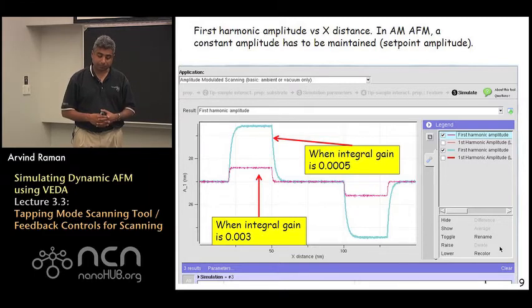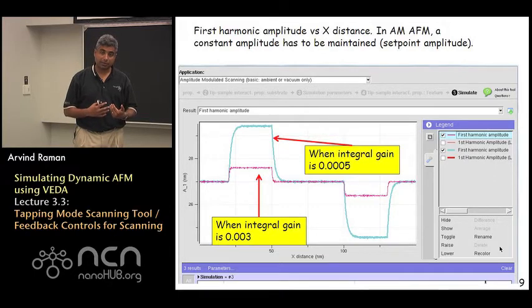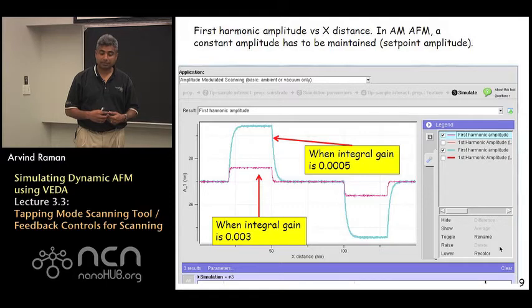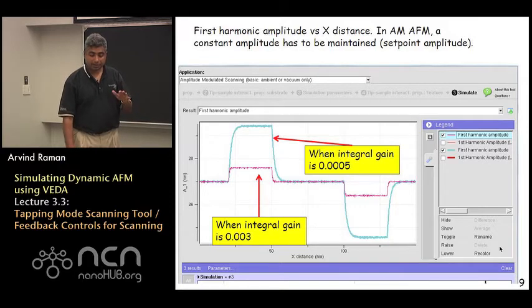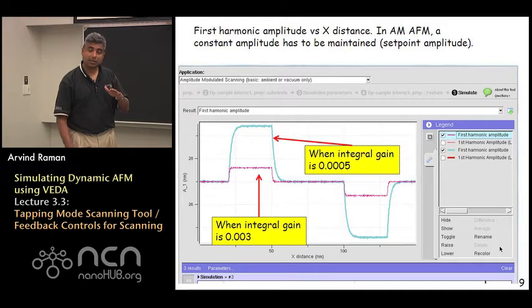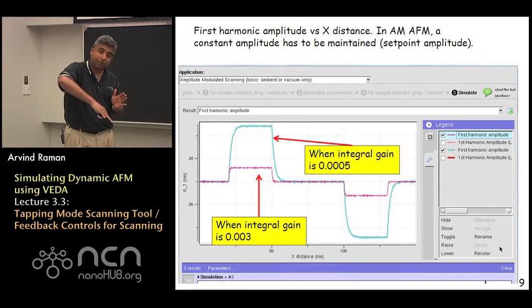You see that in the case when the integral control gain was kept low at the lowest value, 0.0005, the error signal was large. The amplitude actually increased and was not constant as you were going over the downward ramp of the trench.